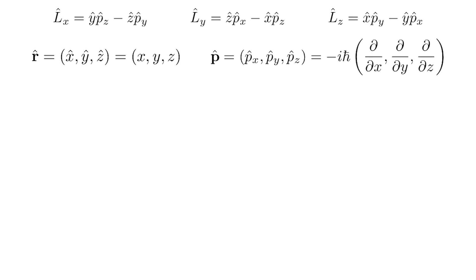What you need to know is that the position operator r is made of these three position operators x, y, and z, and when working in the position representation, all it does is multiply the wave function by the components x, y, and z. Similarly, the momentum operator p is made of these three components, and in the position representation, momentum acts by calculating the gradient of the wave function, all multiplied by minus i h-bar.